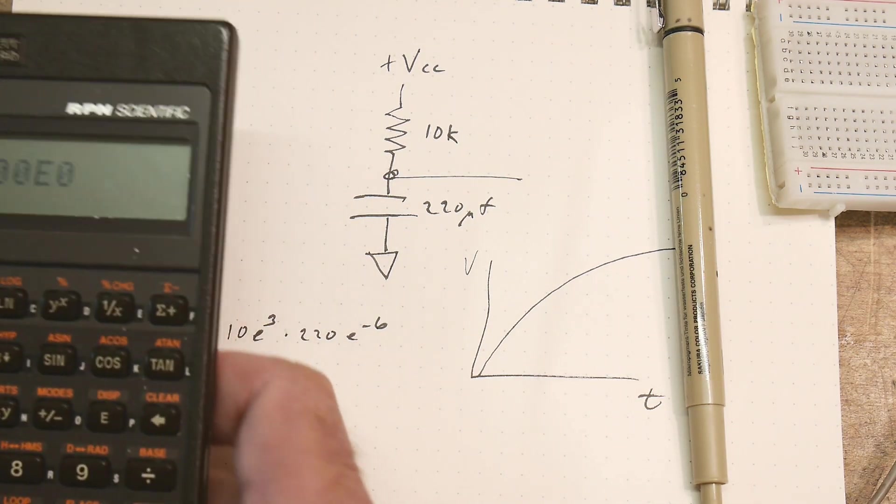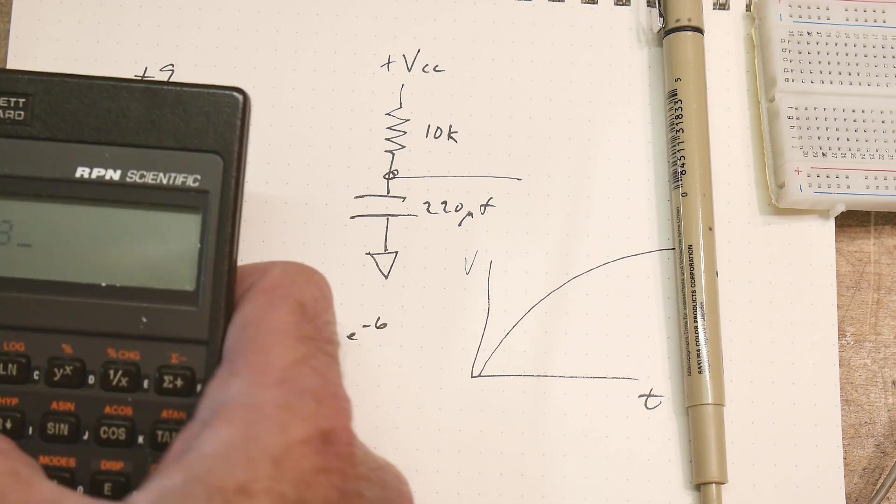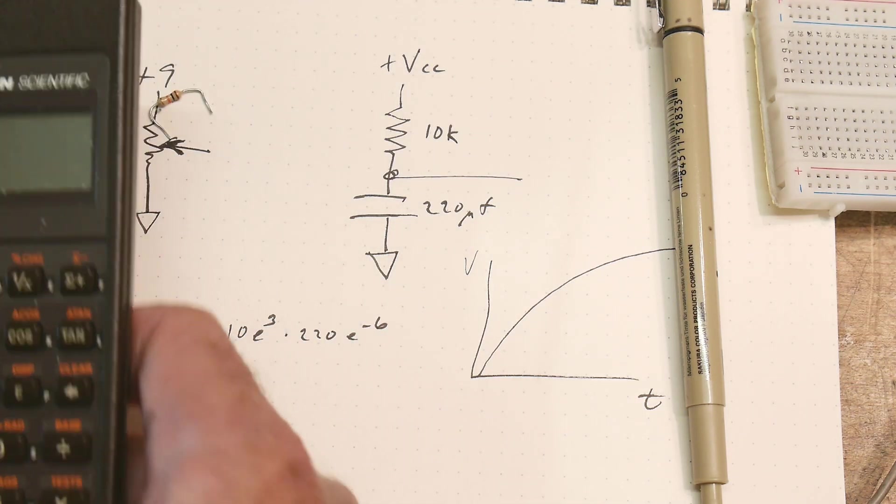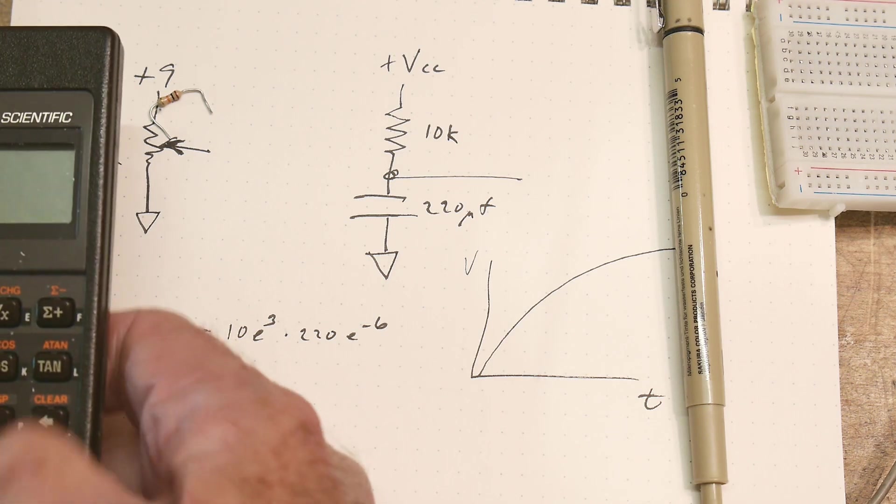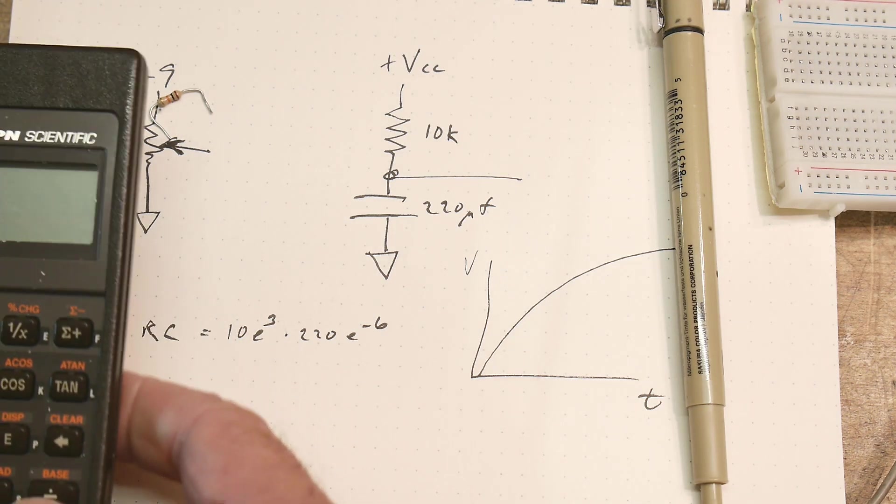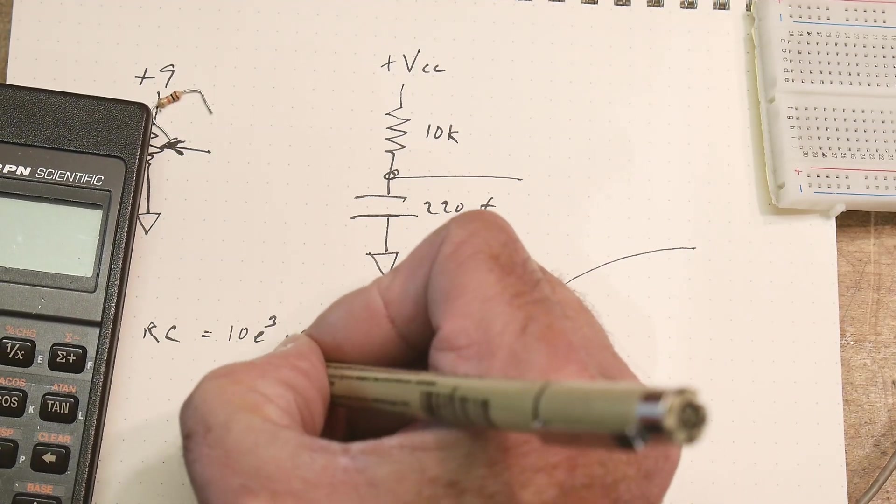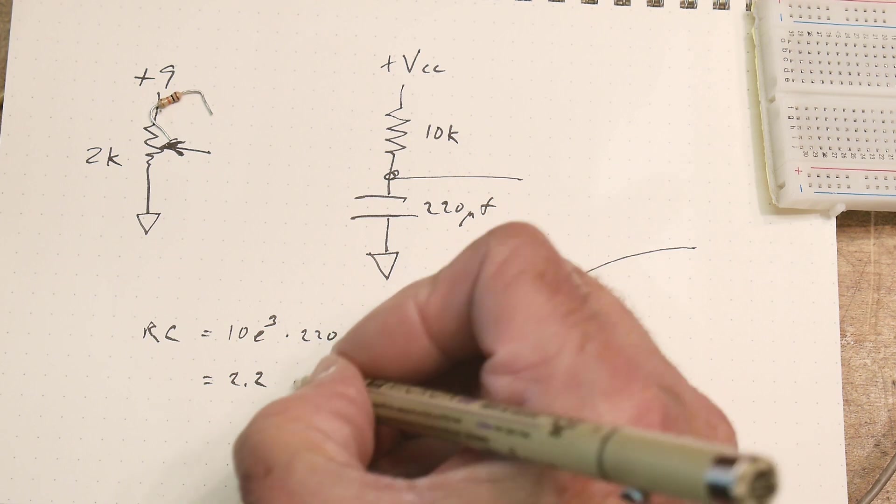And then times 220 microfarads, which is minus 6. Let's do that, 10 E to the 3, and then we'll put in 220 E to the minus 6, and multiply those together, and that equals 2.2. 2.2 seconds.